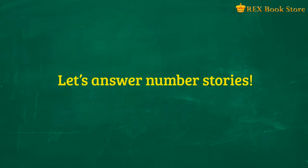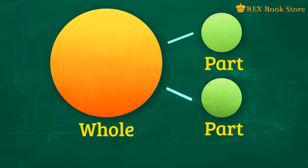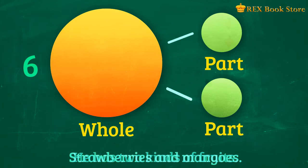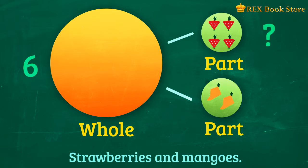Now that you know your number bonds, we can try answering these number stories. Angelo has 6 fruits. He has 2 kinds of fruits, strawberries and mangoes. How many strawberries does he have? Let's count together.